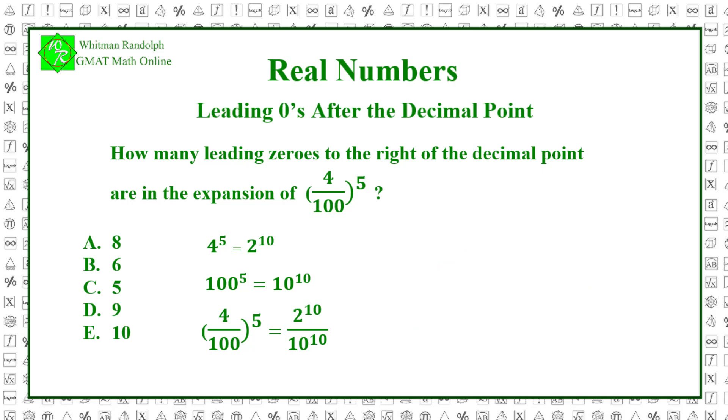Therefore, the number of leading zeros in 2 to the tenth over 10 to the tenth depends on the value of 2 to the tenth, which is 1024. Since we need to shift the decimal point ten positions to the left, and since there are four digits in 1024, then the number of leading zeros in 2 to the tenth over 10 to the tenth is 10 minus 4, which equals 6. So, the correct answer is B.